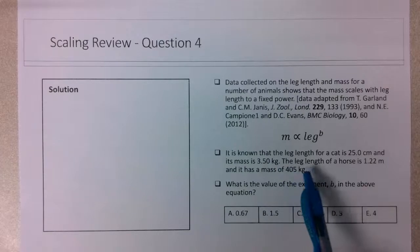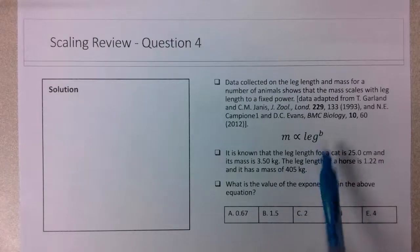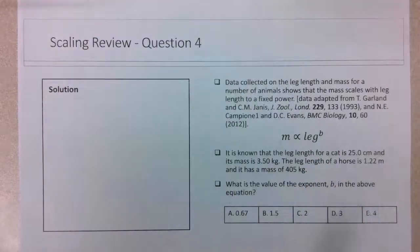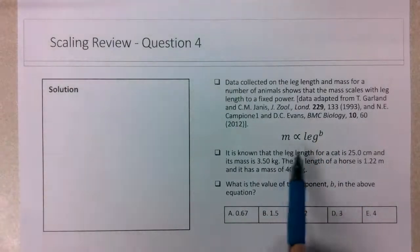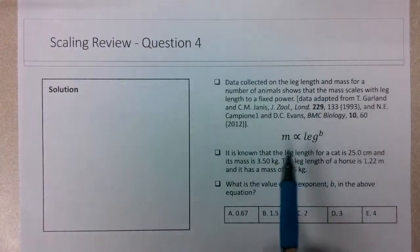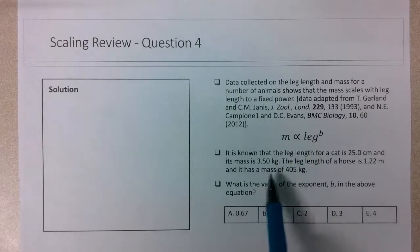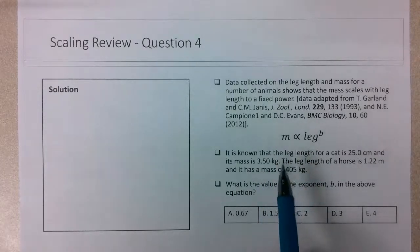I would try to set up a ratio to solve for this exponent b. If there is a proportionality between two variables, there is some proportionality constant. That will be true for both the cat and the horse and will be the same for both.